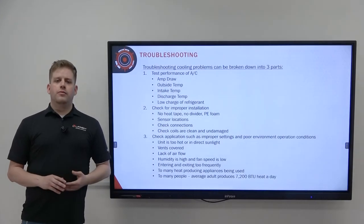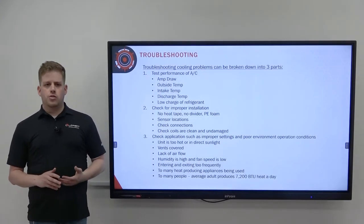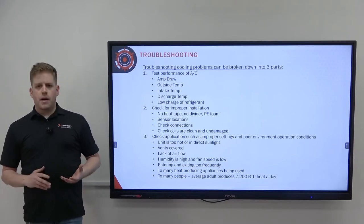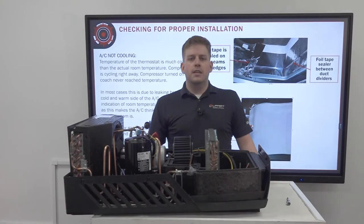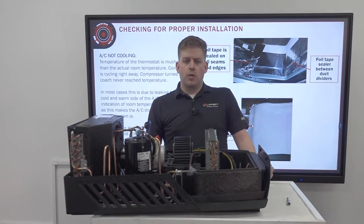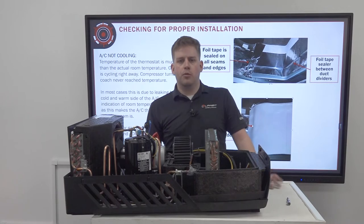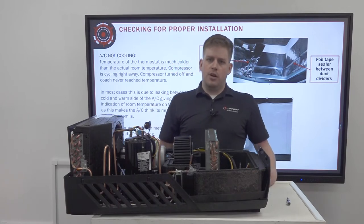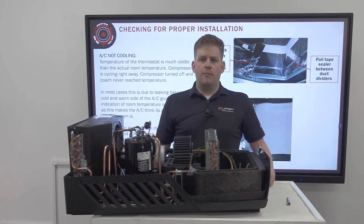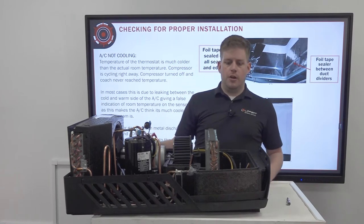Now that we've learned about the different troubleshooting issues, let's go to the mock-up and test an air conditioner. To test, take an amp draw after 15 minutes, an exterior temperature on the roof, an intake temperature at the return air, and a discharge temperature at the closest discharging vent.